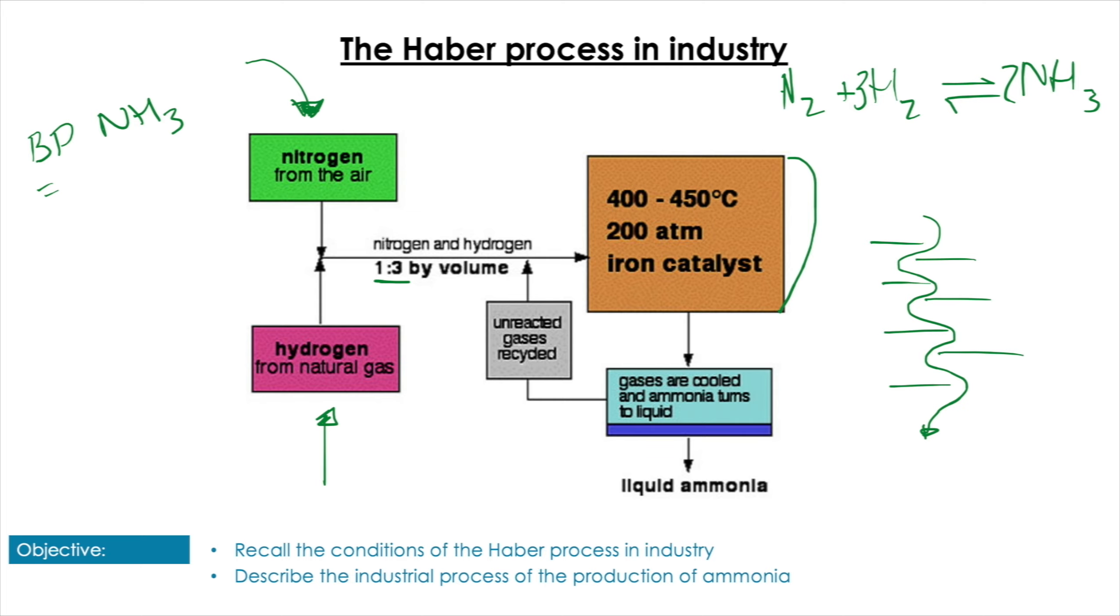And understanding the boiling point of each of these helps us understand why we don't need a high yield. We've got the boiling point of ammonia, which is only -33.4°C. The boiling point of H2 is -259.9°C, and the boiling point of nitrogen is -195.8°C.